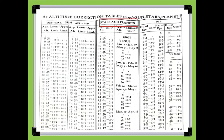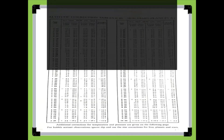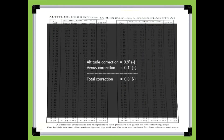Using the altitude correction table of the sun, stars, and planets from the nautical almanac, locate the stars and planets column. Under the stars and planets column, locate the additional apparent altitude correction column. Remember that only Venus and Mars have an additional correction. Move down until July 14th to December 31st, and you will find that the correction from 0 degrees to 60 degrees of altitude is positive 0.1. Take note of the total apparent correction, which is 0.8 minutes.